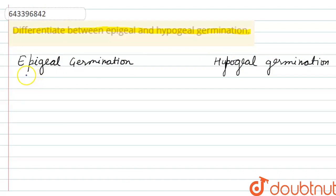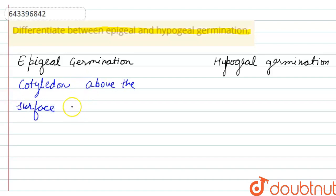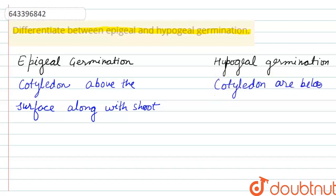In epigeal germination, the cotyledons are above the soil surface along with the shoot at the time of germination. In hypogeal germination, the cotyledons remain below the soil surface. So germination in hypogeal occurs under the soil, while in epigeal germination it occurs above the soil.